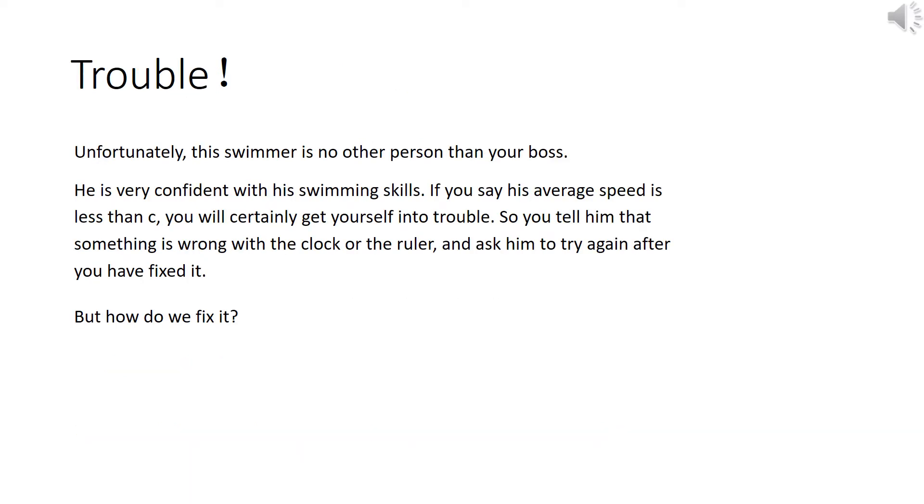Usually, the story will end here. Unfortunately, this swimmer is no other person than your boss. He is very confident with his swimming skills. If you say his average speed is less than C, you will certainly get yourself in trouble. So you tell him that something is wrong with the clock or the ruler and ask him to try again after you have fixed it. But how do you fix it?